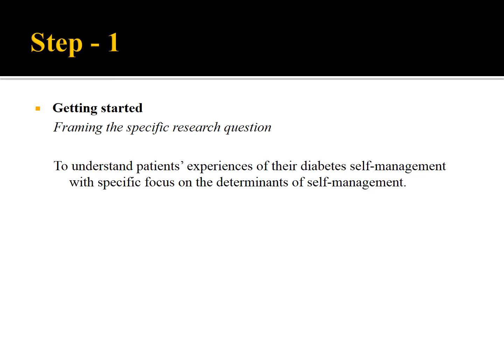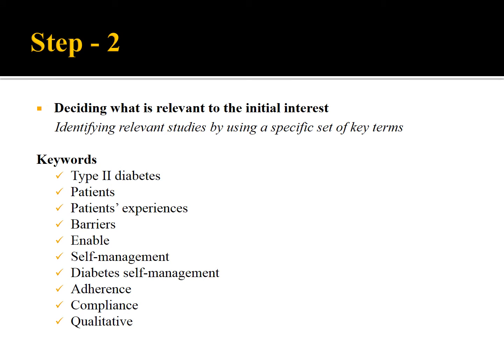Here is the first step: getting started. In this step, we frame a specific research idea which the researcher is interested in. This particular study focused on exploring the experiences of patients pertaining to their diabetes self-management process, and we arrived at a specific research question focusing on synthesizing the findings of several qualitative research works pertaining to that phenomenon. Once the specific idea had been framed, our next step is to identify a set of potentially relevant qualitative research works specific to that context. Here are the key terms which have been used in order to identify potentially relevant qualitative research works pertaining to the diabetes self-management process.